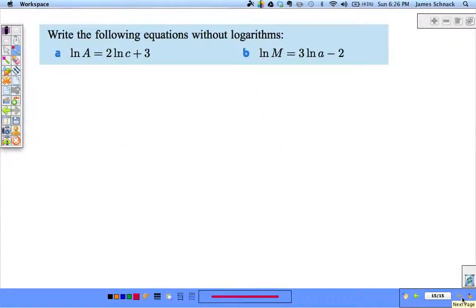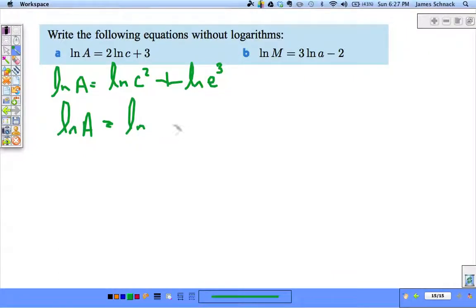Write these without logs. So give it a try. Just like before, we need to get log equal log. So on the right hand side I've got to do some manipulation. Natural log of c^2, plus natural log of e^3. Natural log of A equals the natural log of c^2·e^3. And now that we have log equal log, A is equal to c^2 times e^3.